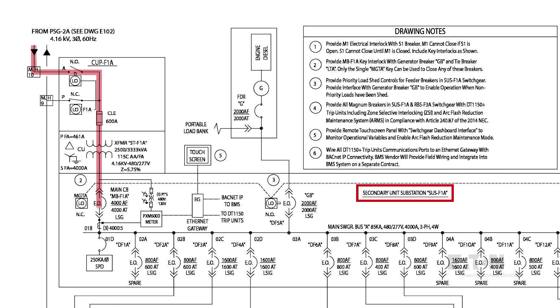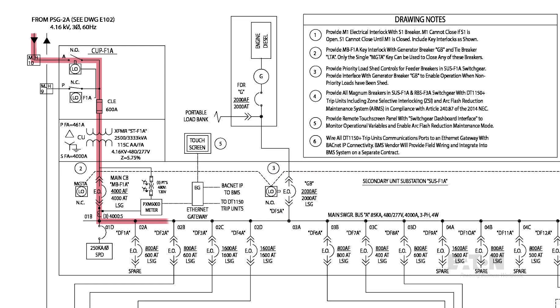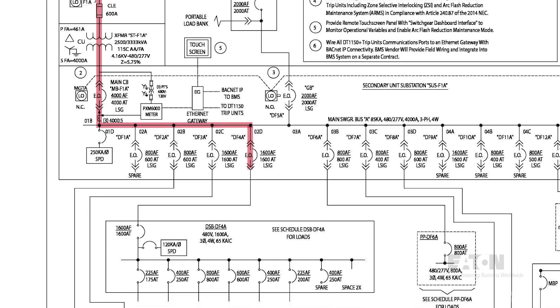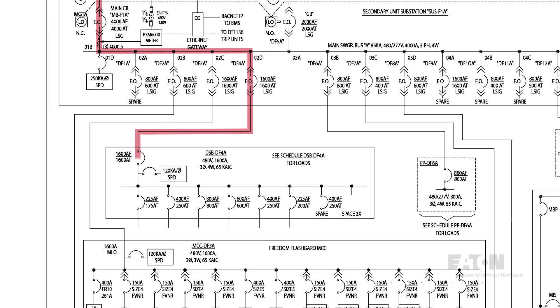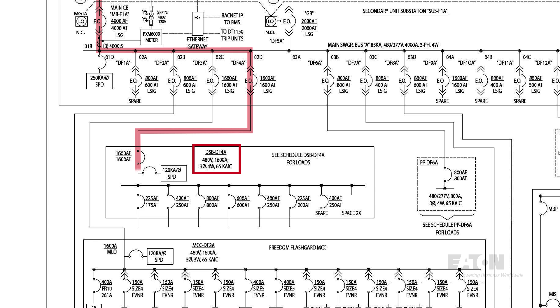This is low voltage switchgear, which we can identify as all of the breakers shown are draw out. This switchgear has multiple incoming sources, including the main breaker and a generator. The feeder breaker in 2D directly feeds the main breaker of DSB-DF4A. Now we understand how power flows to DSB-DF4A.